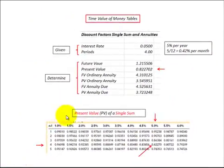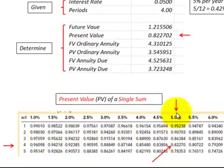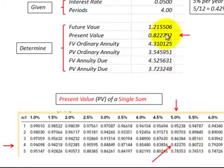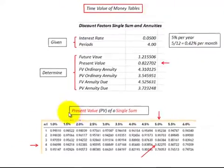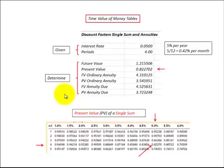Typically, we're given a table with the interest rate across the top and the number of periods down the side. You take your number of periods and your interest rate, and where they intersect you'll get the factor used for determining a present value. We'll use these tables as a reference in cash flow diagrams so you get a good understanding of how to use your calculator or an Excel function to determine future values and present values.